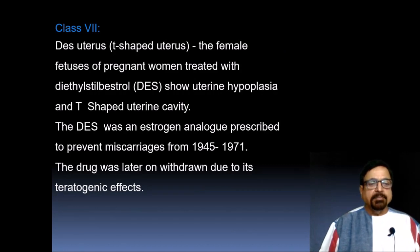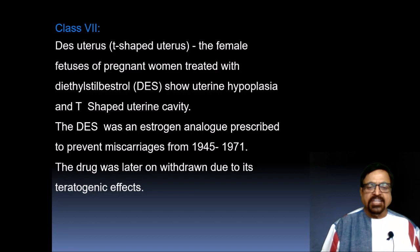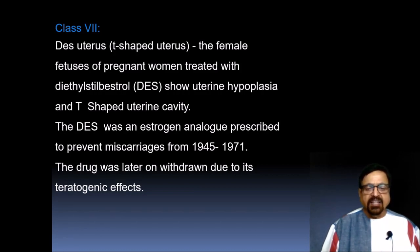Class 7 is the DES uterus — that is, the T-shaped uterus. Female offspring of pregnant women treated with DES (diethylstilbestrol) show uterine hypoplasia and a T-shaped uterine cavity. DES was an estrogen analogue prescribed to prevent miscarriages from 1945 to 1971. The drug was later withdrawn due to its teratogenic effects.